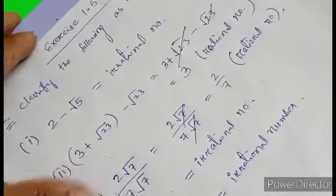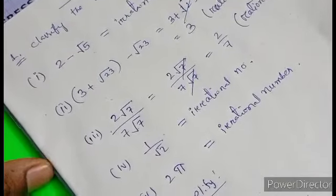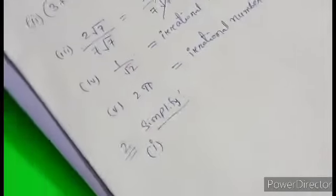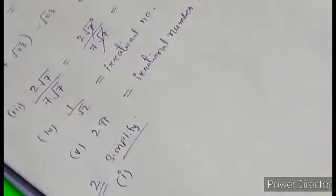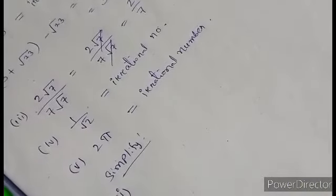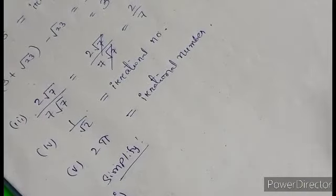Clear, everyone? So we have classified the numbers based on their properties. Now we move on to Question 2: Simplify each of the following expressions. Roman numeral one: